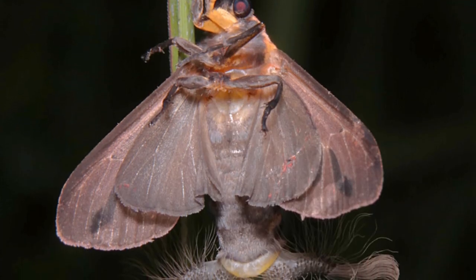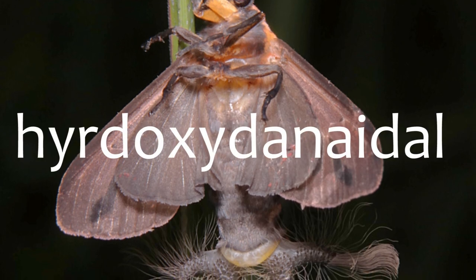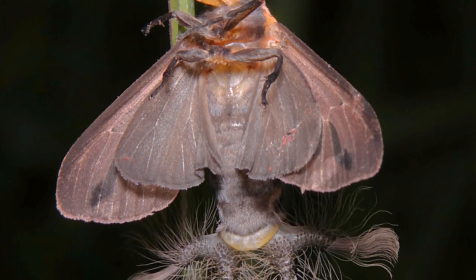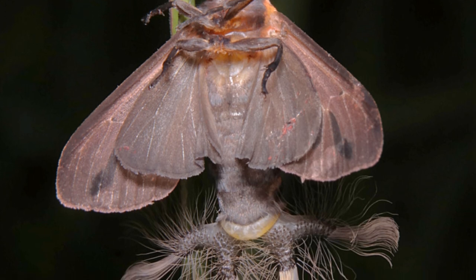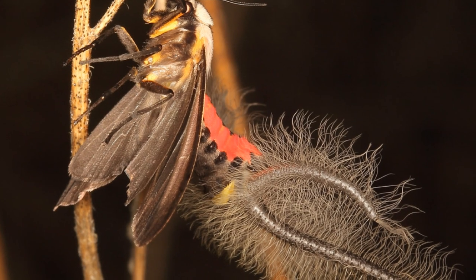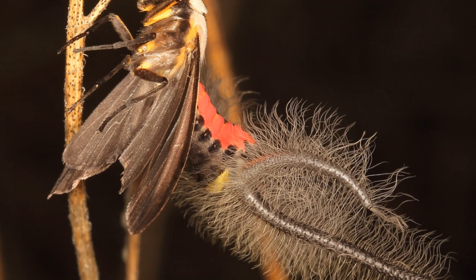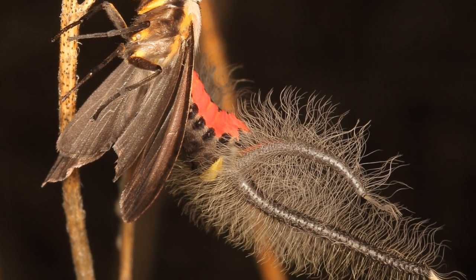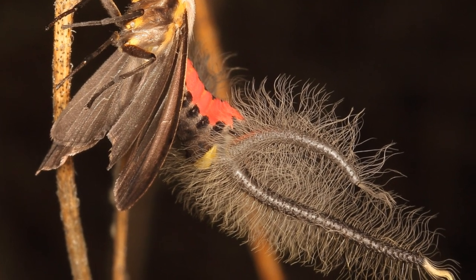The pheromone secreted by the males is called hydroxydenoidal, and the amount produced by the males is heavily dependent upon the diet the male had when it was in the larval stage. A diet with more nicene bases, a type of alkaline found in types of grain, will allow the male to produce more of the pheromone.